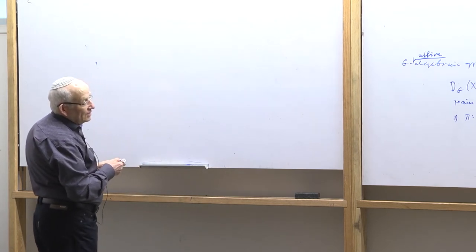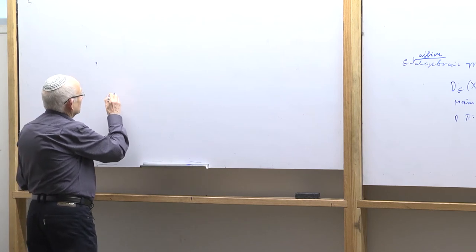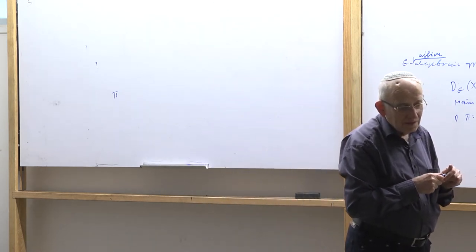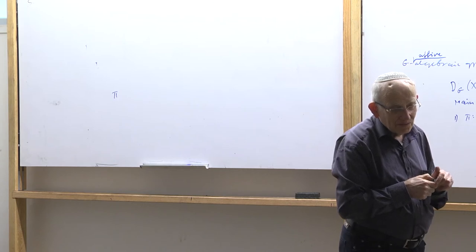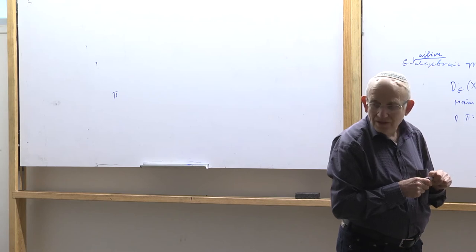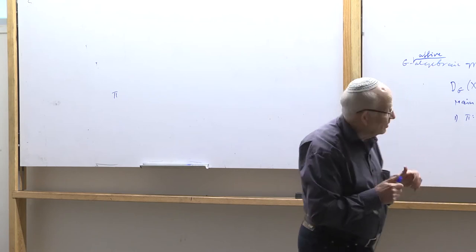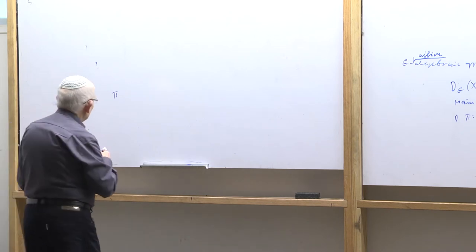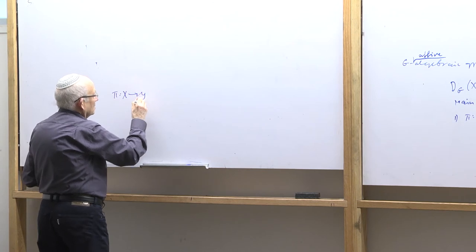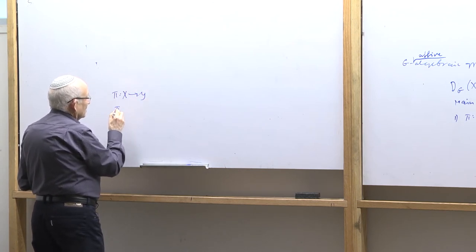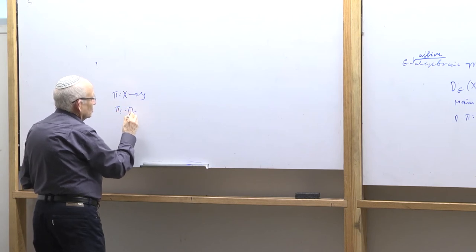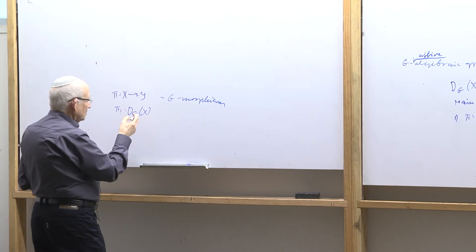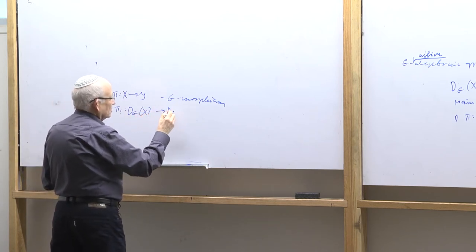Let me give the proof. Suppose I want to construct, for instance, a functor. We defined the category last time. Now I want to construct a functor — suppose I have a morphism X to Y. For instance, define functor pi-upper-star from D_G(X) into D_G(Y). Let's choose a sheaf f here.